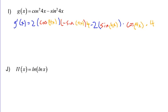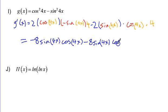Now we can clean this up and combine like terms. We have negative 2 times 4 gives me negative 8 sine 4x times cosine 4x. Minus 2 times 4 is 8, sine 4x times cosine 4x. And negative 8 sine 4x cosine 4x minus 8 sine 4x cosine 4x.